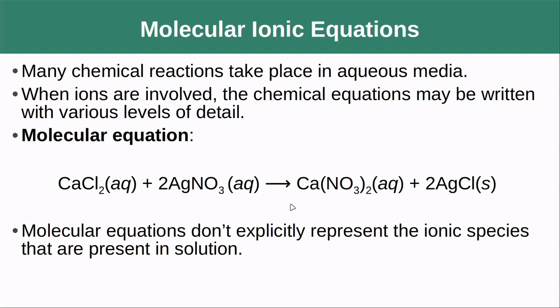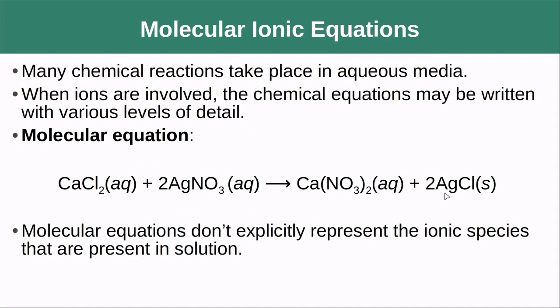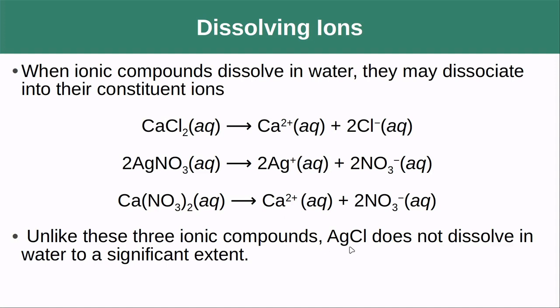But this doesn't explicitly represent the fact that this is not the molecule that actually exists in the water anymore. In fact, what happens is when you take these ionic species and you place them into water, they are going to dissociate and form ions in those solutions. So calcium chloride is going to break up into a calcium ion and two chloride ions. Silver nitrate is going to break up into two nitrate ions, calcium nitrate is going to break up into calcium and two nitrate ions. Because the silver chloride was indicated to be a solid back here, that's indicating that it did not dissociate, it did not dissolve in the water. So it did not form ions.